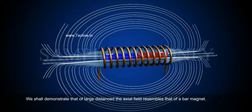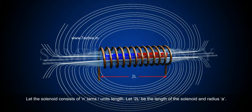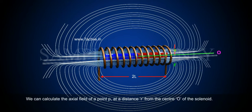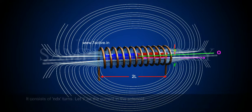We shall demonstrate that at large distances the axial field resembles that of a bar magnet. Let the solenoid consist of n turns per unit length, 2L be the length of the solenoid, and a be its radius. We can calculate the axial field at a point P at a distance r from the center O of the solenoid. Consider a circular element of thickness dx at a distance x from its center, consisting of n dx turns. Let i be the current in the solenoid.